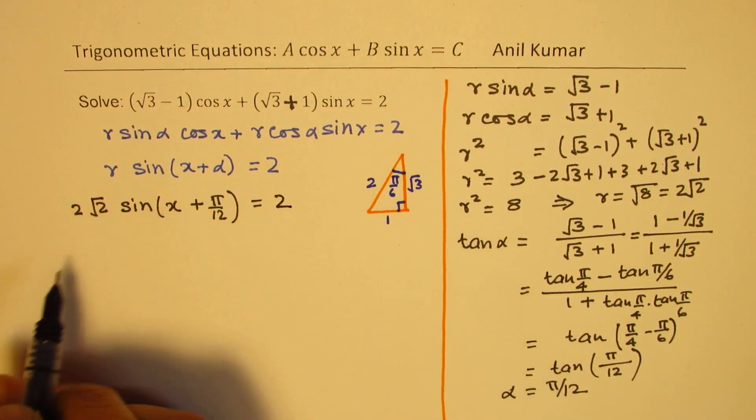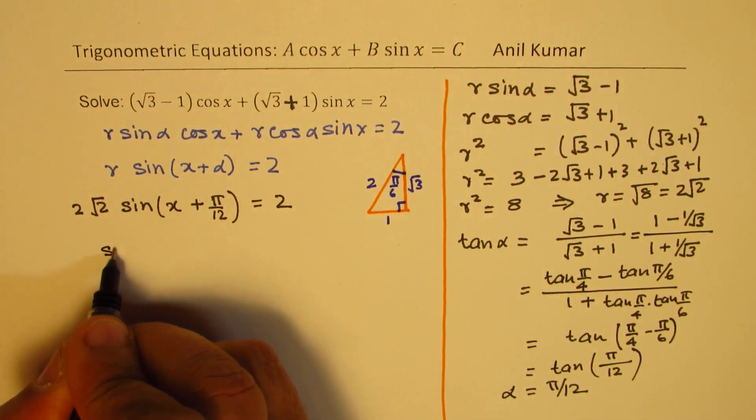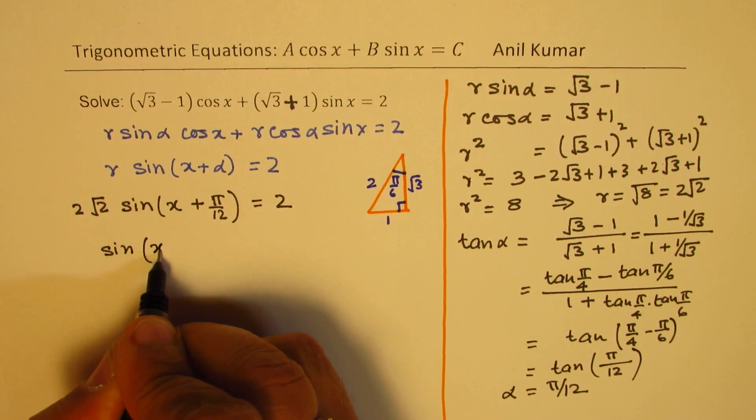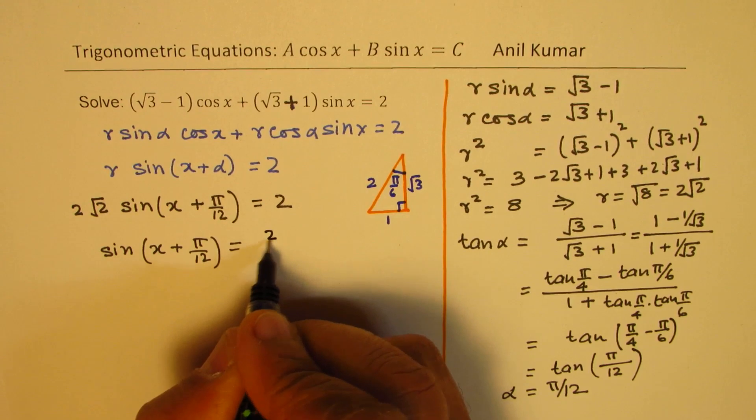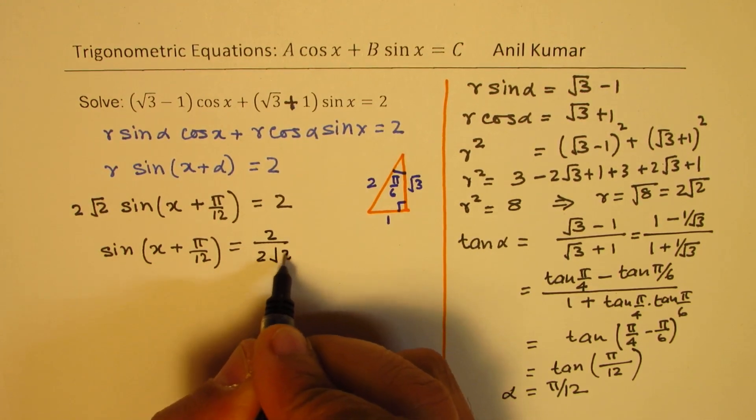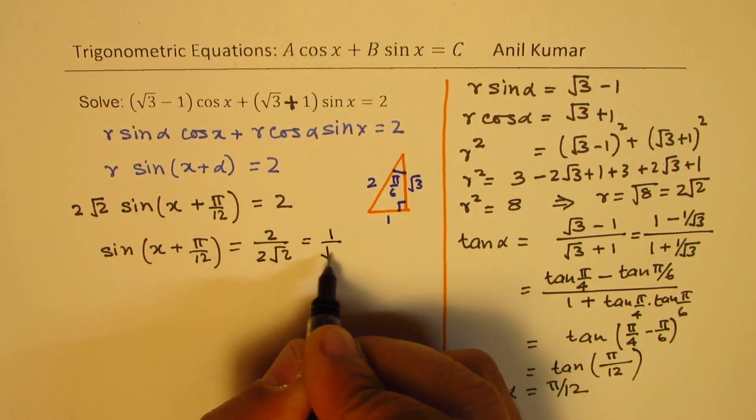Now dividing, we get sine of x plus pi by 12 as equal to 2 over 2 square root 2, which is 1 over square root 2.